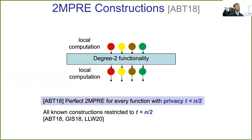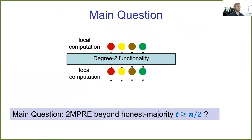Unfortunately, all known constructions of 2MPRE are restricted to the honest majority setting, so the privacy threshold is always less than half. And our main question was, can we construct a 2MPRE with a privacy threshold larger than half?